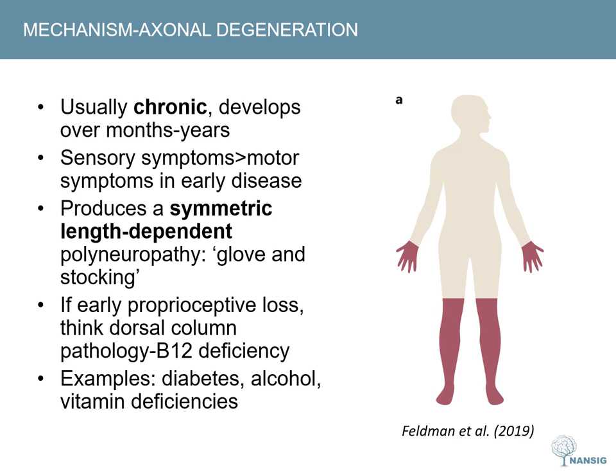Note that proprioception is relatively intact compared to other sensory modalities and is only affected later. So if there is early proprioceptive loss, such as gait ataxia, then you need to think about dorsal column disease — for instance from B12 deficiency.